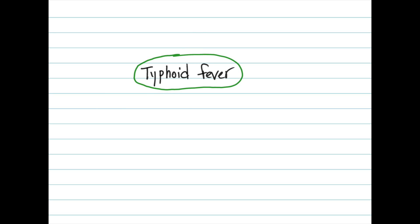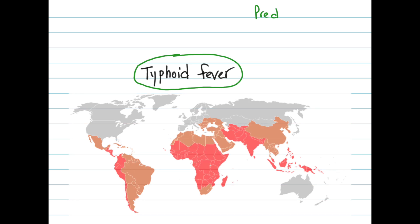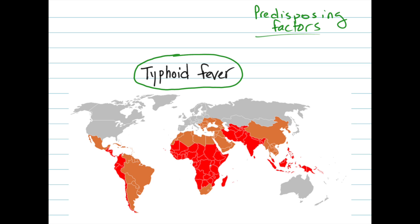Predisposing factors for typhoid fever largely center around endemic areas, which are characterized usually by developing countries with areas of poor sanitation, as this disease is spread by a fecal-oral route.